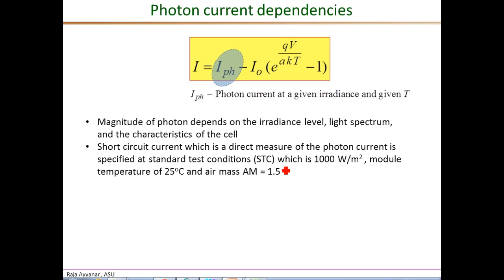To give some rough estimate, some feel for the numbers, for typical commercial solar cells, the short circuit current or the photon current is roughly about 30 milliamperes per square centimeter of the PV cell, and that is at the STC.